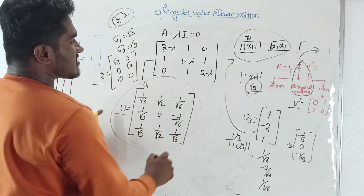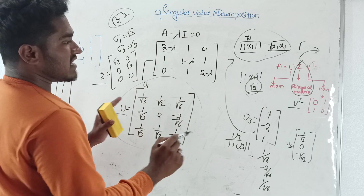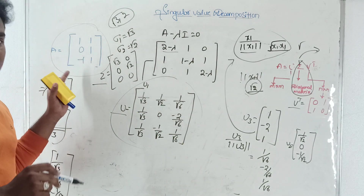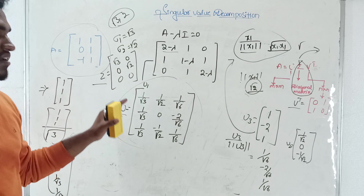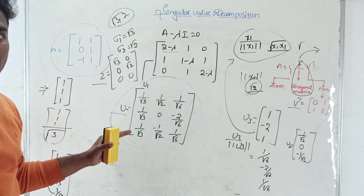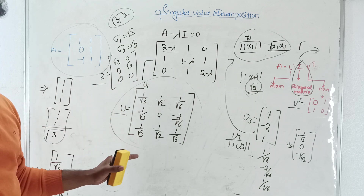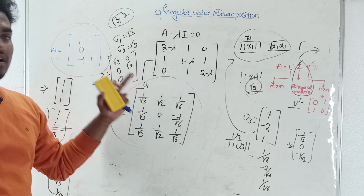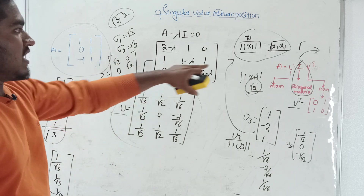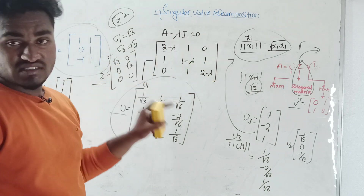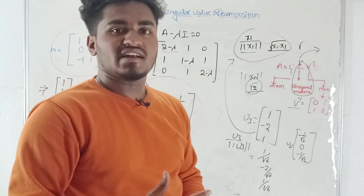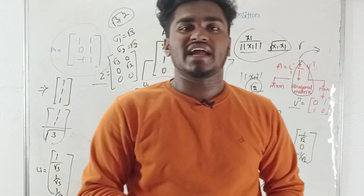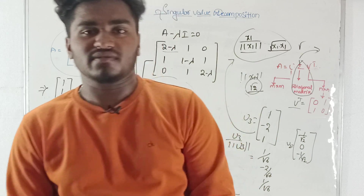Now we have V transpose, U, and Sigma. You can verify the decomposition by multiplying these three matrices and checking whether you recover the original matrix A. If you do, the process is correct; otherwise something went wrong. Please compute the multiplication and share your result in the comment section. Thank you for watching — don't forget to subscribe and share with your friends.